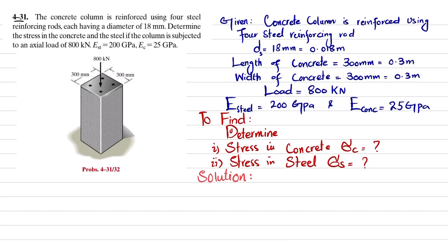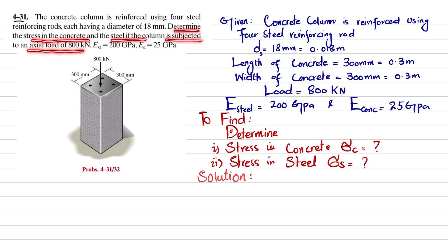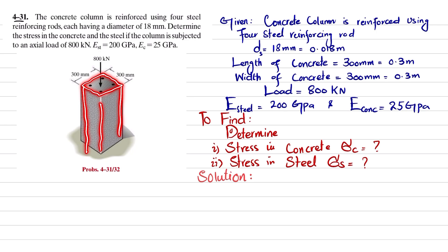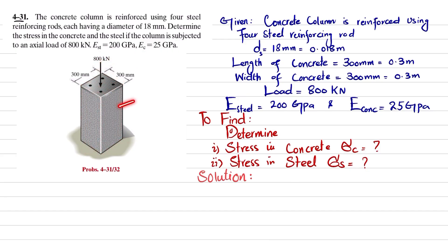Welcome back. Problem 4-31: a concrete column is reinforced using four steel reinforcing rods, each having a diameter of 18 millimeters. Determine the stress in the concrete and steel if the column is subjected to an axial load of 800 kilonewtons. The modulus of elasticity of steel is 200 gigapascals and for concrete it is 25 gigapascals. This is a 300 by 300 concrete column acted upon by a load of 800 kilonewtons.